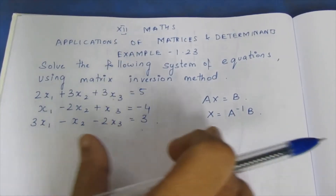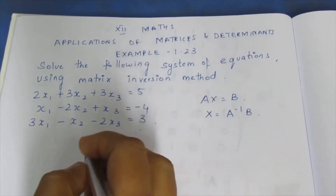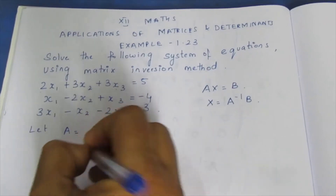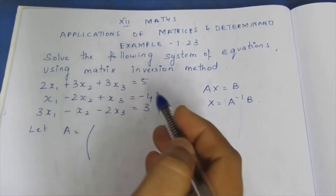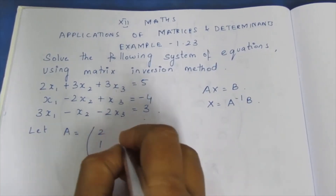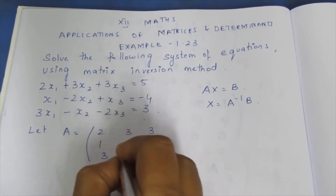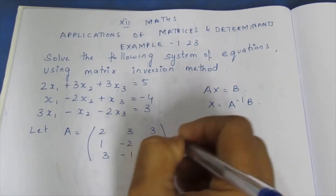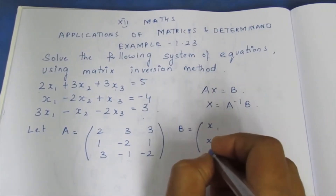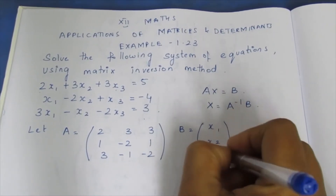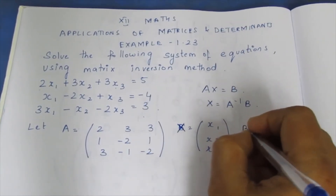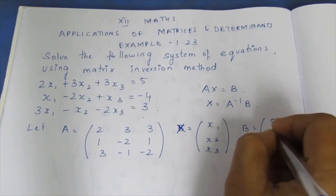Let's identify matrices A, X, and B. A is equal to the coefficient matrix: [2, 3, 3; 1, -2, 1; 3, -1, -2]. X is the variable matrix [x1; x2; x3], and B is equal to the constant matrix [5; -4; 3].